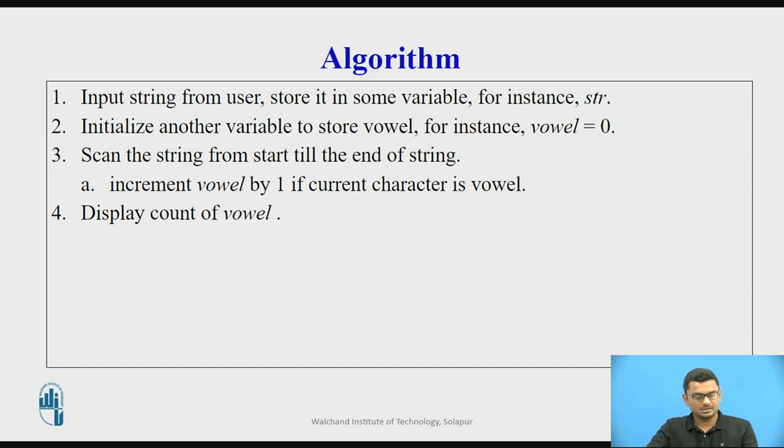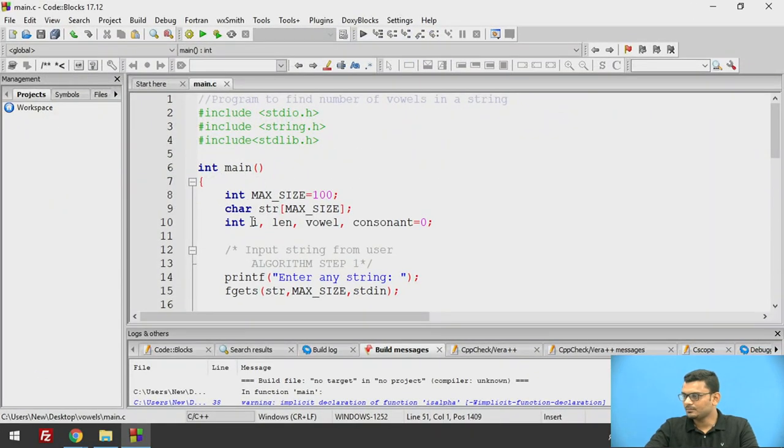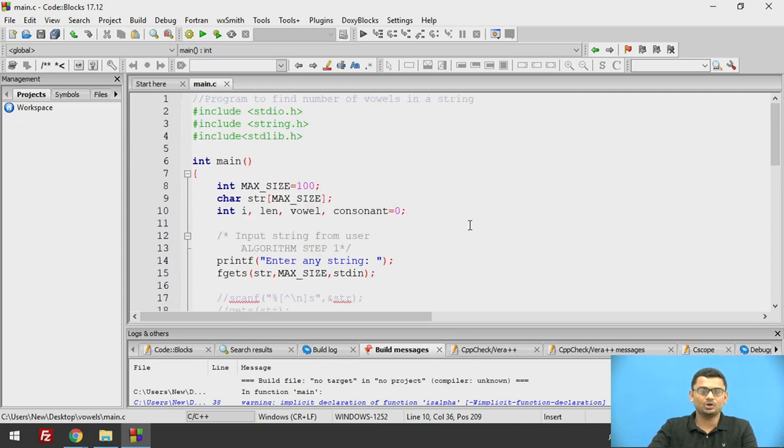Now I will demonstrate how we will go about solving the problem. This is Code Blocks IDE. I highly recommend you to use this IDE because this is a freely available software and it helps to keep all your code compiled in one place so that you can build the entire project at the same time. So this is the program to find the number of vowels in a string. I have included these header files which I am going to use in my program.